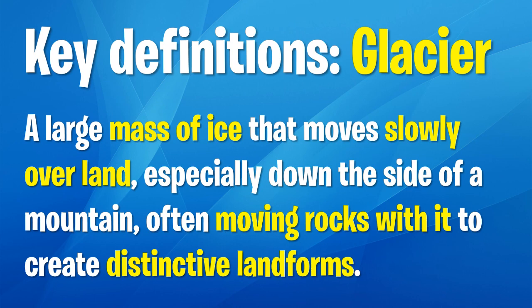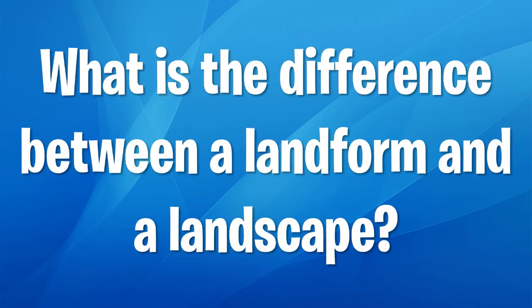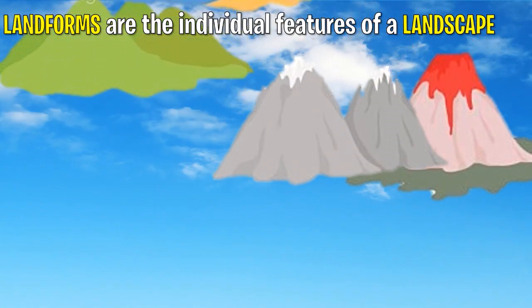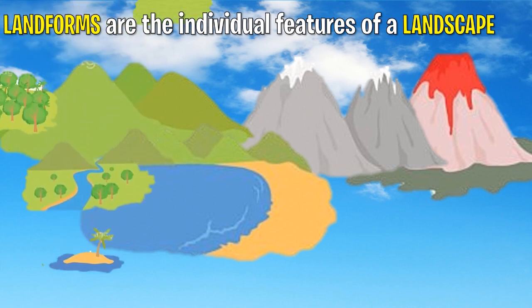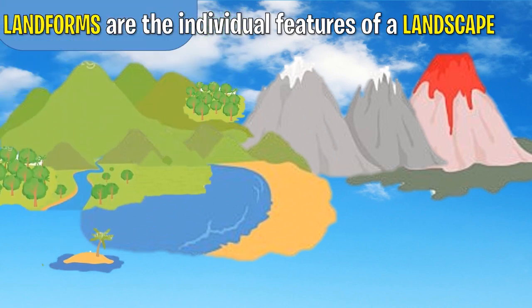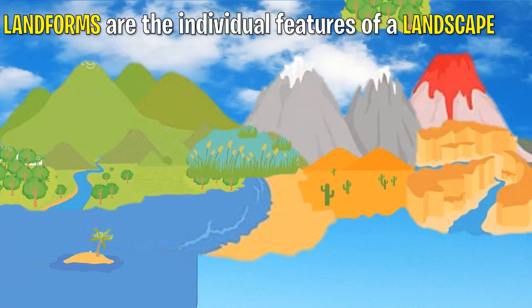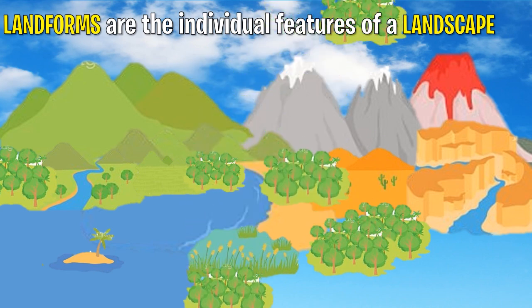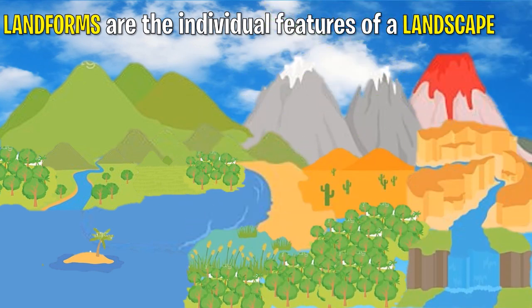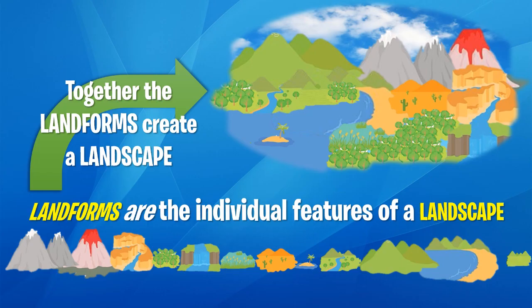Now that begs the question: what's the difference between a landform and a landscape? Simply put, a landform is the individual features of a landscape. So here we can see individual landforms being arranged to produce a landscape. The landforms are the individual features, and together they create a landscape.